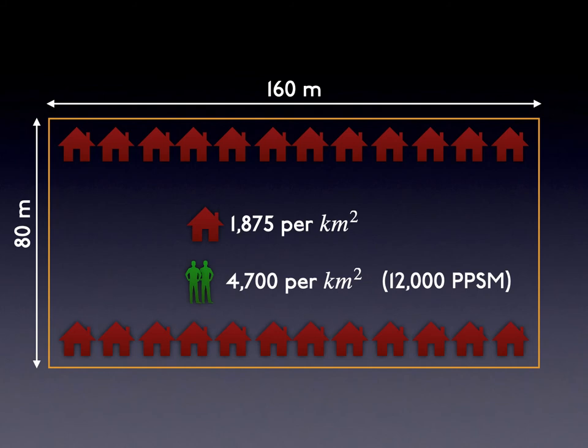At 2.5 persons per household, typical of the United States, this gives us 12,000 persons per square mile (PPSM), about 4,700 per square kilometer, in single-family homes at typical built densities. While some space is devoted to schools, parks, retail, commercial, and industrial activity, among other uses, this should be persuasive that 10,000 persons per square mile is feasible over large areas without Manhattan-like high density.